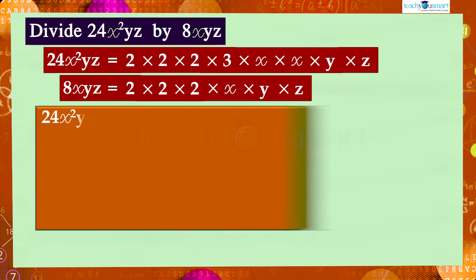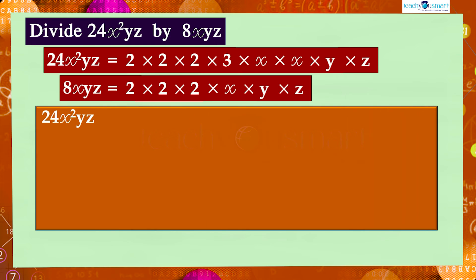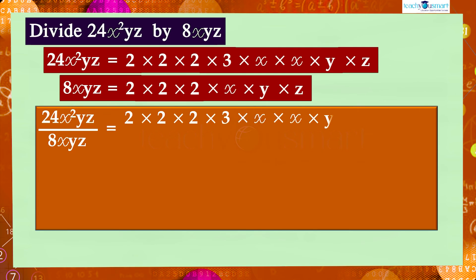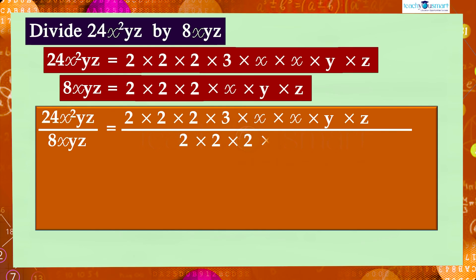Therefore, 24x²yz divided by 8xyz equals (2 × 2 × 2 × 3 × x × x × y × z) divided by (2 × 2 × 2 × x × y × z), which equals 3 × x, which equals 3x. This result is also a monomial.